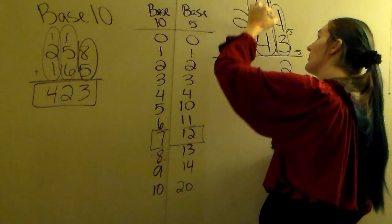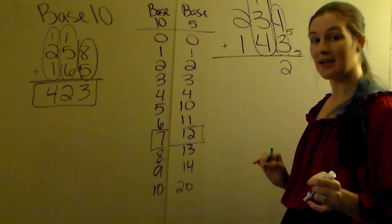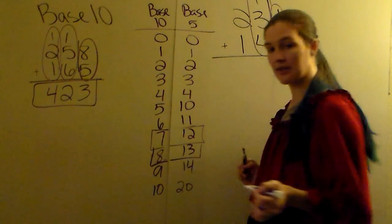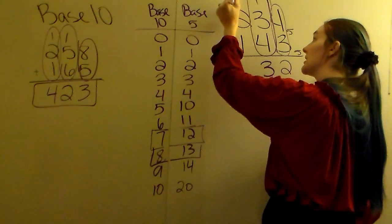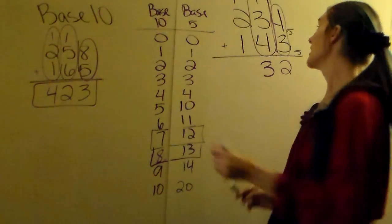Then you're going to add again, just like in base 10. 1 plus 3 plus 4 gives us 8. You're not allowed 8 in base 5. 8 is the equivalent of 13. Write your 3, carry your 1, just like you did in base 10.